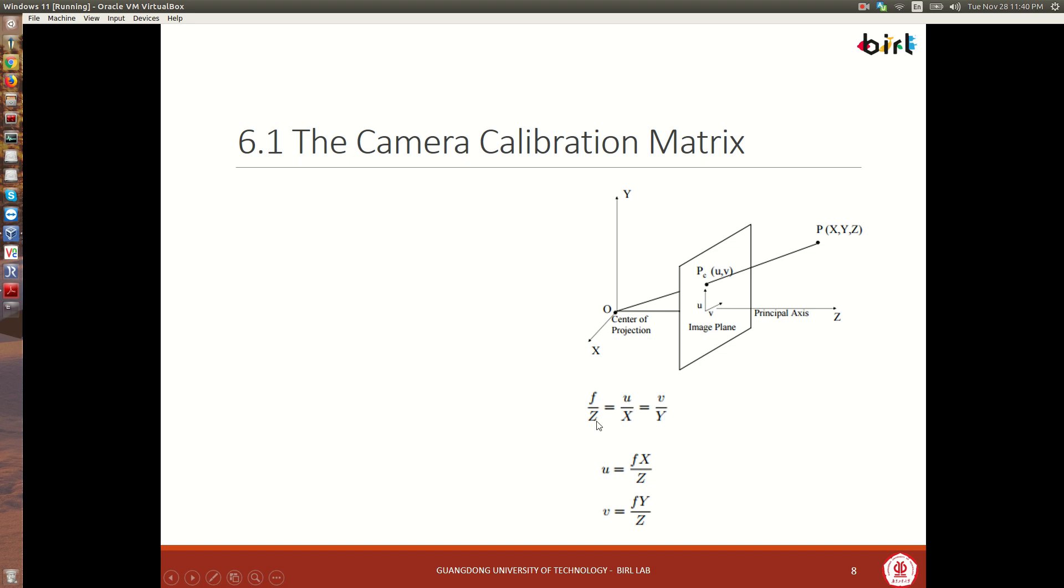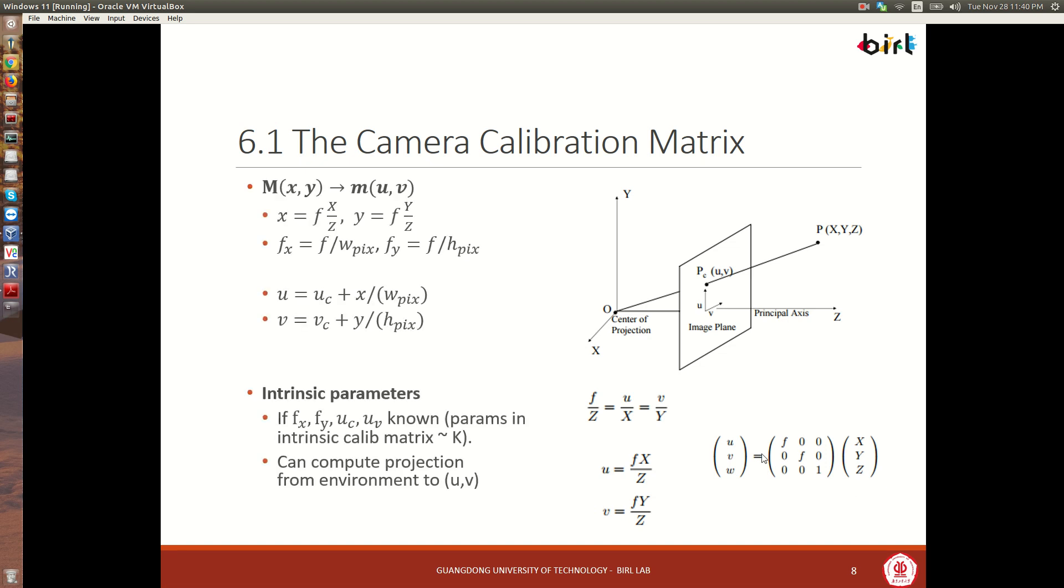And by doing that we can solve for U and V in the following way. U equals F times X over Z, and V equals F times Y over Z. So you can see that now we have a 2D image plane representation in terms of these metric coordinates. Now these two letters can be introduced into a homogeneous matrix using the following format. Look at the notes for more reference.